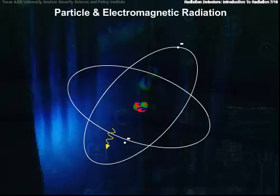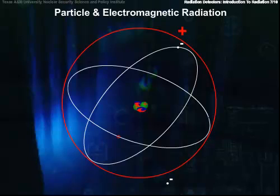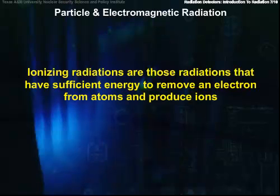When one of these electrons is removed from the neutral atom, the remaining atom that's missing electrons is called an ion. Ionizing radiation is thus defined as those radiations that have sufficient energy to remove electrons from atoms and produce ions.